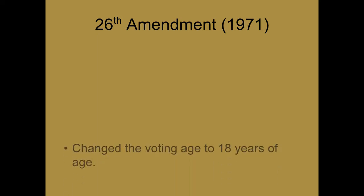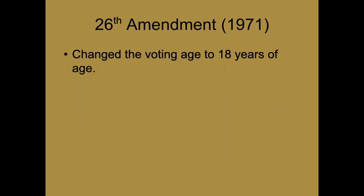In 1971, we passed the 26th Amendment that changed the voting age to 18. This was in the midst of the Vietnam War, which involved the United States from 1965 to 1973, and the draft was going on. Eighteen, nineteen, and twenty-year-olds were being drafted into service. They were asked to fight and die for their country, yet they weren't even allowed to vote for the members of Congress and the president who were sending them off to war. This just seemed fundamentally wrong, so the voting age was changed to 18.